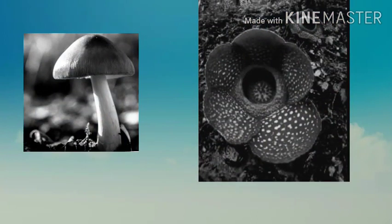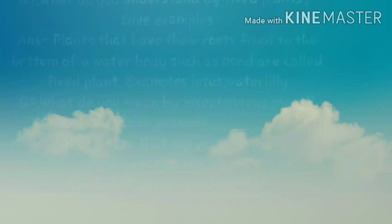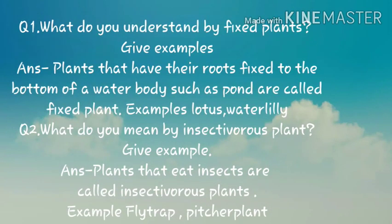Now let us do some question and answer. Question 1: What do you understand by fixed plants? Give examples. Plants that have their roots fixed to the bottom of a water body such as a pond are called fixed plants. Examples: lotus, water lily.